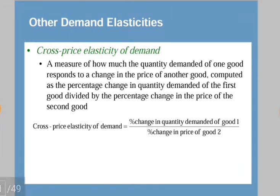Now let's look at cross price elasticity of demand — a measure of how much the quantity demanded of one good responds to a change in the price of another good. Basically, the quantity demanded of a particular good changes due to a change in the price of some other good. It is computed as the percentage change in quantity demanded of the first good divided by the percentage change in the price of the second good.